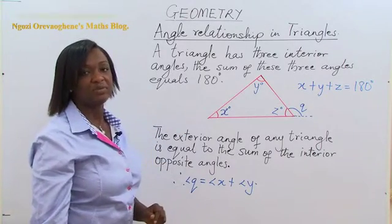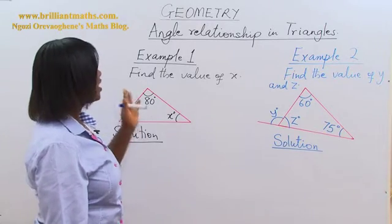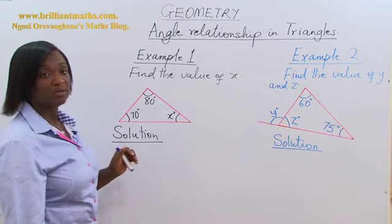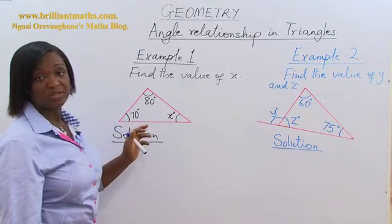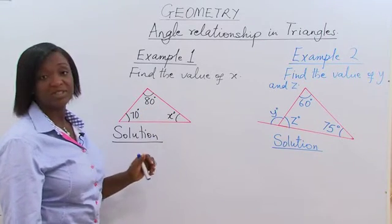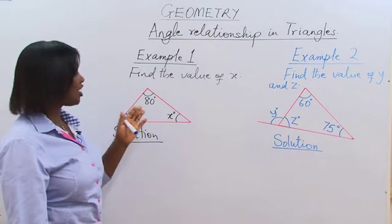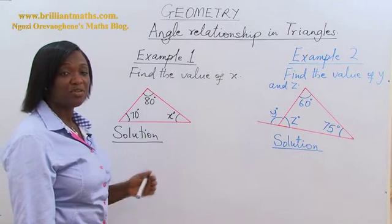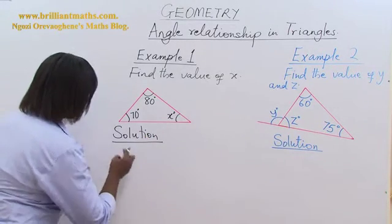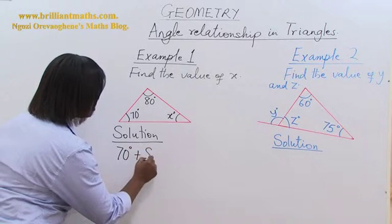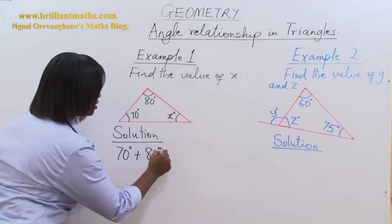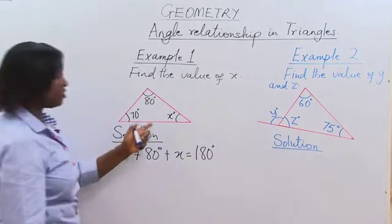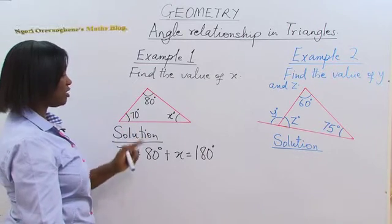Let's look at the first example. Find the value of X. We have a triangle. The first angle is 70 degrees, the second is 80 degrees, and the third one is unknown. We know that the sum of the angles of a triangle is equal to 180 degrees. So, 70 degrees plus 80 degrees plus X is equal to 180 degrees. The reason is: sum of the angles of a triangle.